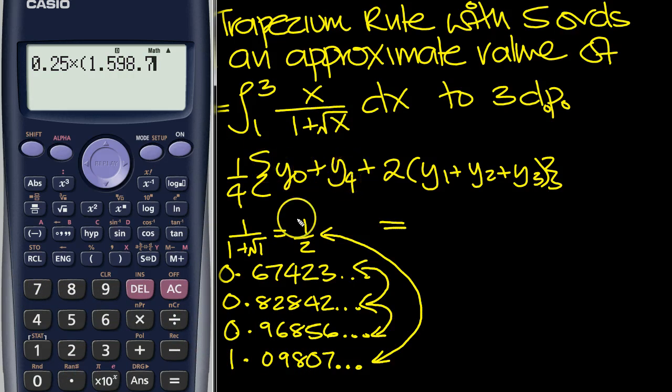That was that one and that one. Plus 2 times bracket. And these three added together. 0.67423 plus 0.82842 plus 0.96856. Close that bracket and then close the bracket for the expression.